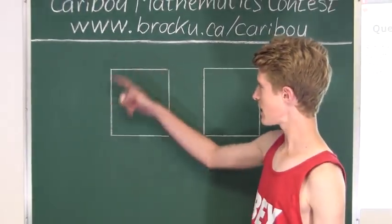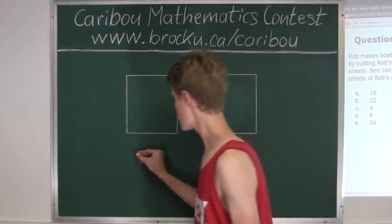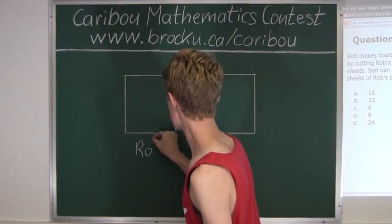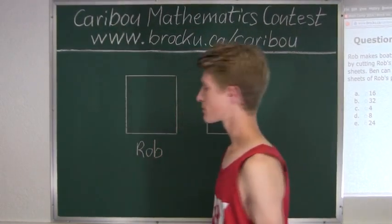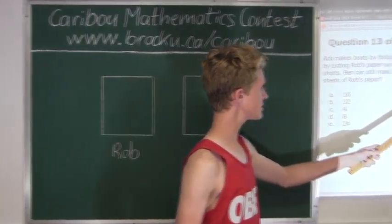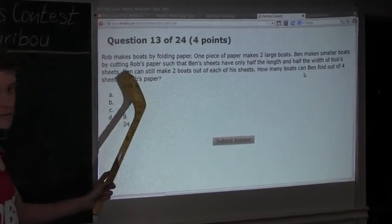Now let's pretend that this shape here is Rob's sheet of paper. From the question we know that Ben's sheets have only half the length and half the width of one of Rob's sheets.